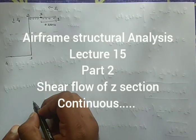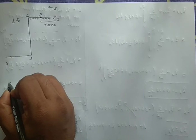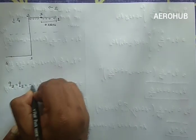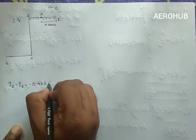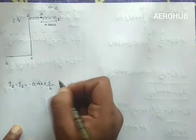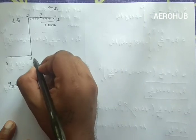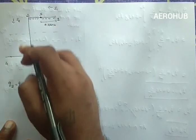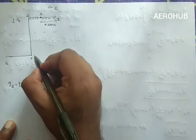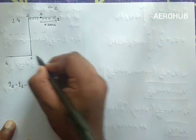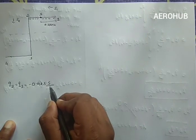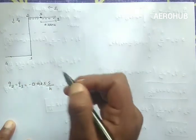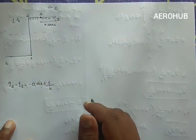The values of Q2 and Q3 are the same: Q2 = Q3 = -0.425 S/H. This means that the shear flow is getting reversed at point 0.3. We assumed a shear flow from top to bottom for portion 2-3, and we got the value of Q3 as -0.425 S/H, confirming the reversal at 0.3.